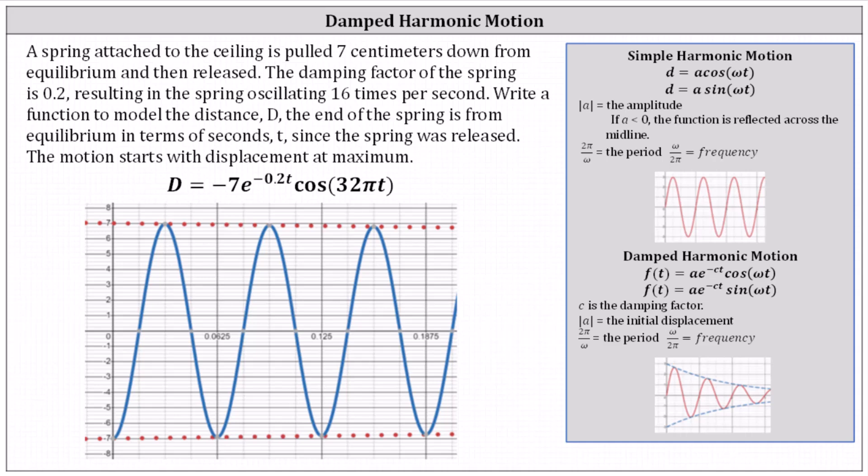Notice the graph also includes two dashed red curves. The red curve above is y equals 7 e to the power of negative 0.2t. Notice all the relative maximums are points on this curve.